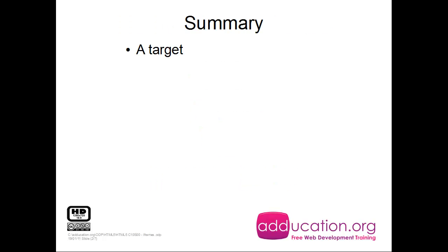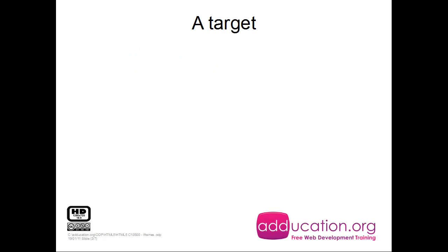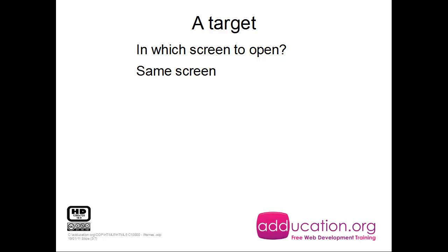So the summary. First the anchor target — we're going to discuss the several anchor targets, and then we're going to discuss the several values you have. If I have an anchor, a link, in which browser would it open? Is it in the same screen, a new screen, so it opens a new browser or a new tab, or in a certain iframe?